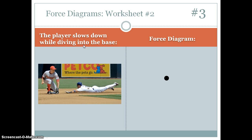Today you're going to work on a homework assignment called worksheet number two, where you're given several different situations — an object moving at constant velocity, speeding up, slowing down, or at rest — and you need to draw the force diagram and determine the value and direction of the sum of the forces. Let's turn to number three on worksheet number two and do this together.